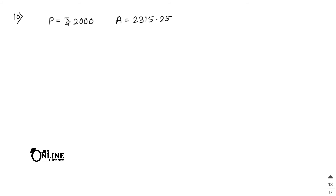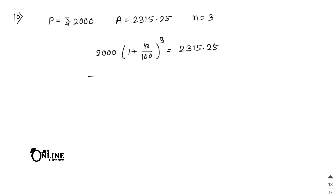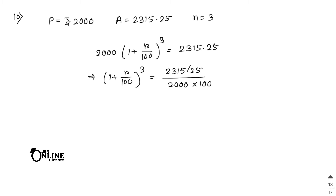Sum number ten: at what rate percent will P equals rupees 2,000 amount to rupees 2,315.25 in three years? So 2,000 into (1 + r/100) cubed equals 2,315.25. Therefore (1 + r/100) cubed equals 2,315.25 divided by 2,000. Removing the decimal, that equals 231,525 divided by 200,000. Dividing both by 25 gives 9,261 divided by 8,000.